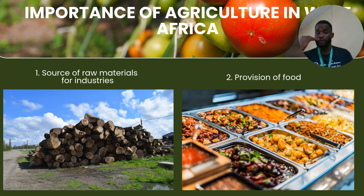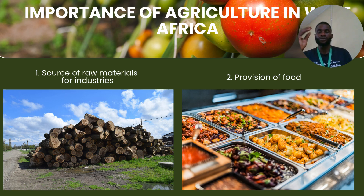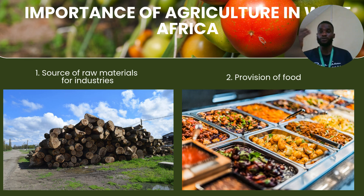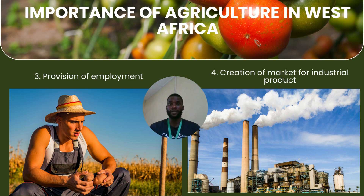Regarding the importance of agriculture in West Africa: agriculture has played a lot of important roles in West Africa as a sub-region. Number one is as a source of raw materials for industry. Lots of industries depend on agricultural produce as raw material to survive and keep supplying goods and services. Apart from that, provision of food is very important — agriculture provides food such as rice, maize, millet, etc. for human consumption. Agriculture in West Africa has also created employment for above 70% of the population, as well as creation of markets for industrial goods.